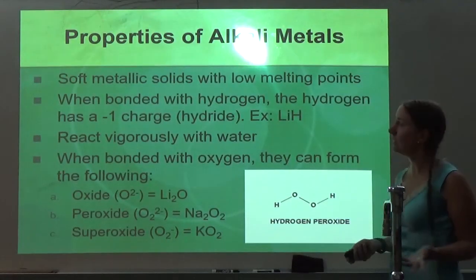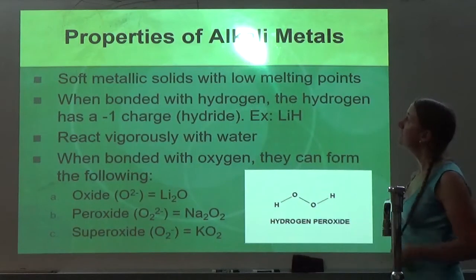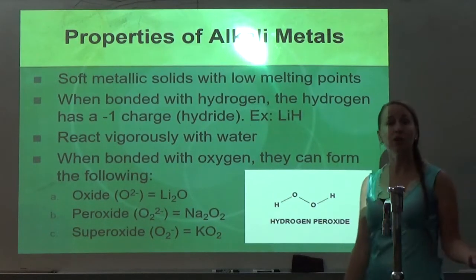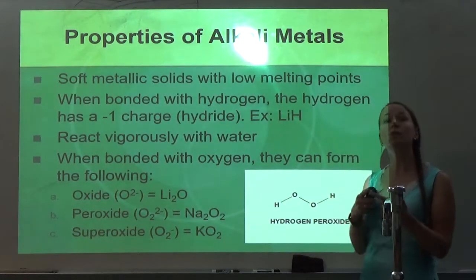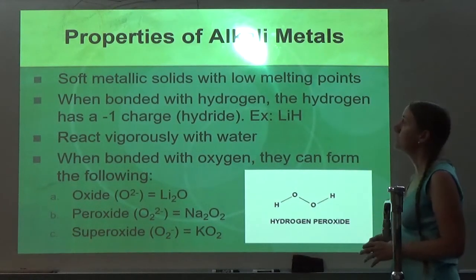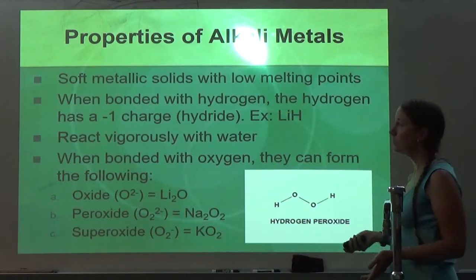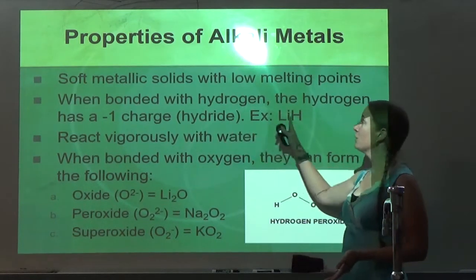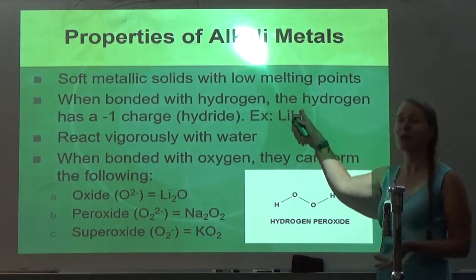So what are some properties of alkali metals? Well, they're soft metallic solids with low melting points. You saw in Honors Chem when I cut the sodium metal with a spatula. When bonded with hydrogen, the hydrogen has a negative 1 charge and becomes a hydride. So if it reacts with hydrogen, it'll become a metal hydride.